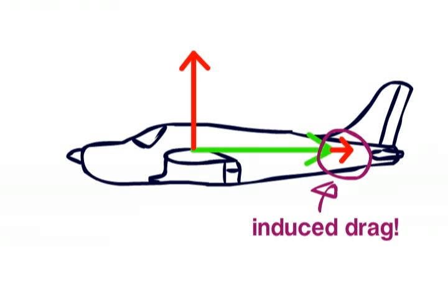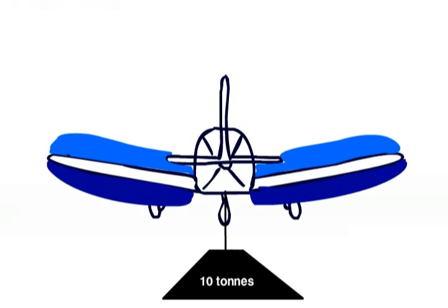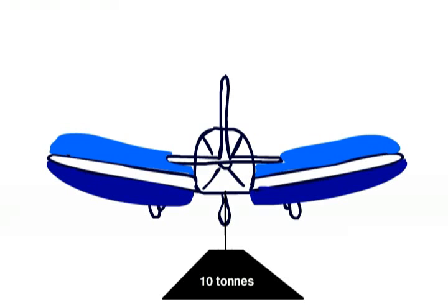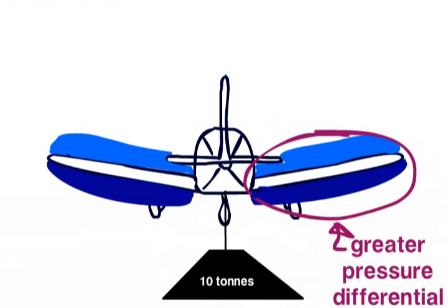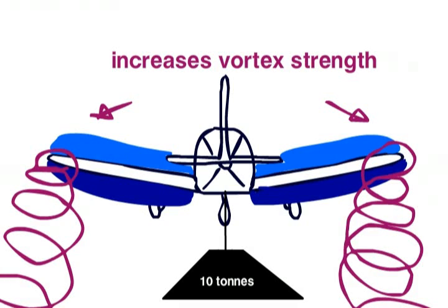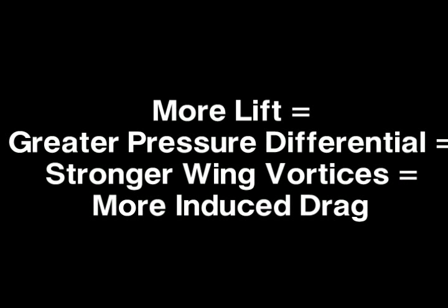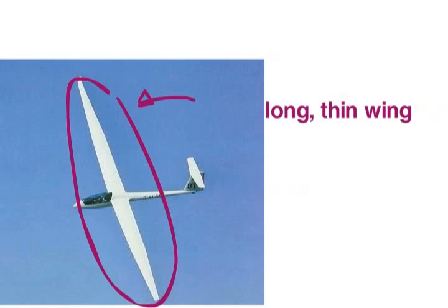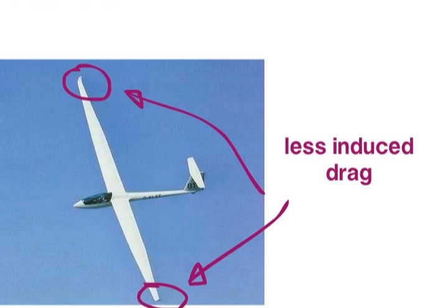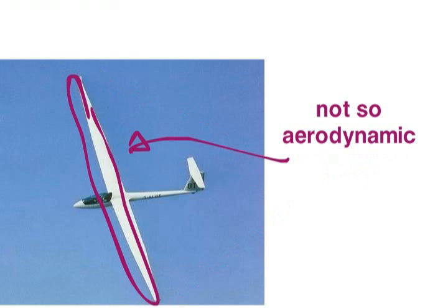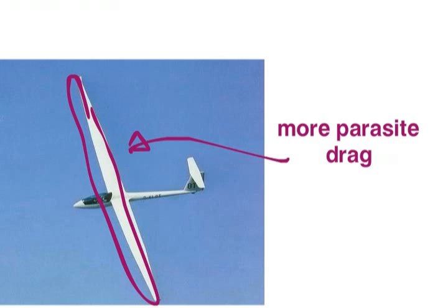The induced drag is affected by the lift being generated by the wing. The heavier the aircraft, or the tighter the turn, the more lift the wing is having to provide, the greater the pressure differential is on either side of the wing, and the greater the strength of the vortices. As I said in the previous video, more lift means more induced drag. Wings that are long and thin are also good for reducing induced drag, as less wing is covered by the vortex affected air. However, they are not so good at reducing parasite drag, so a happy medium has to be found.